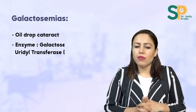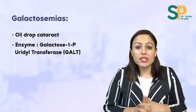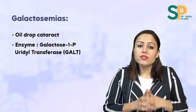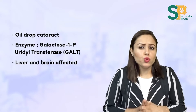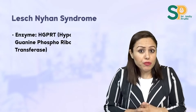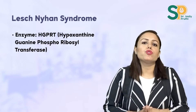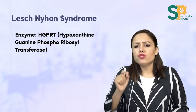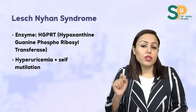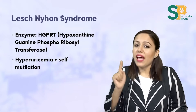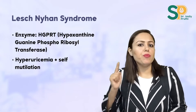Also do galactosemia, in which patients have oil-drop cataract. The main enzyme deficiency in galactosemia is galactose-1-phosphate uridyl transferase; liver and brain are affected. Then do Lesch-Nyhan syndrome — frequently asked. The deficient enzyme is HGPRT (hypoxanthine-guanine phosphoribosyl transferase). Whenever self-mutilation is given in the question, quickly go for Lesch-Nyhan syndrome. These patients also have hyperuricemia.